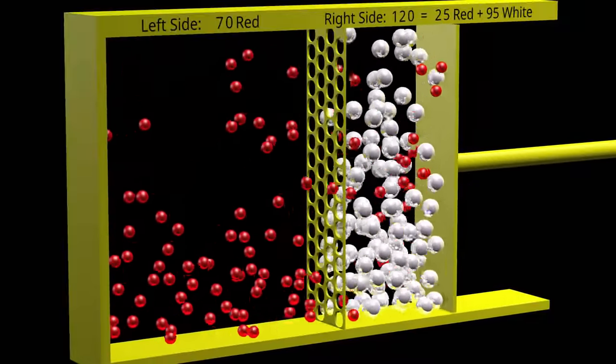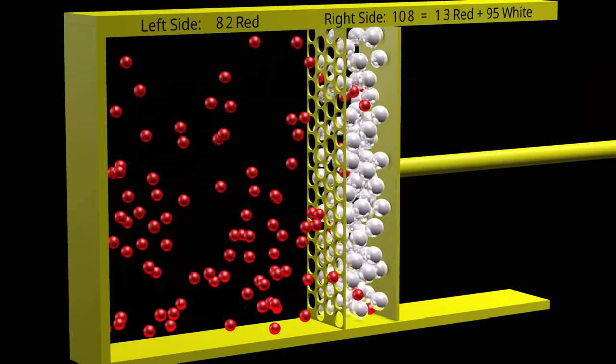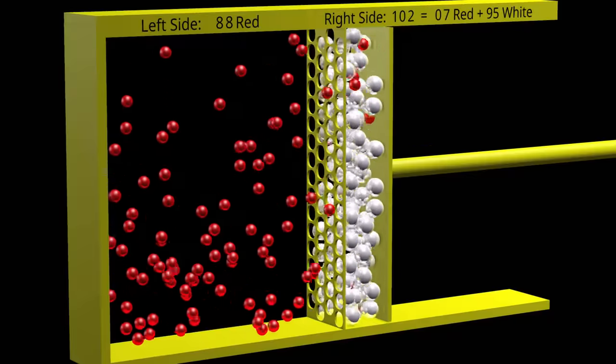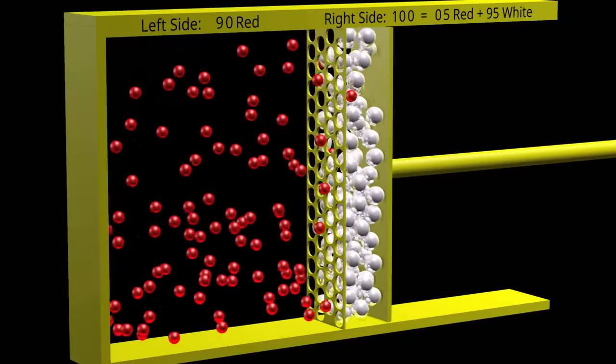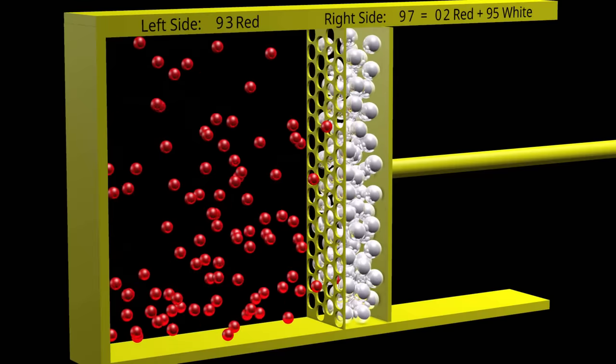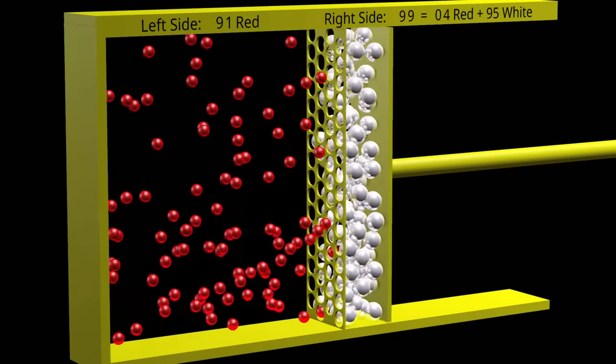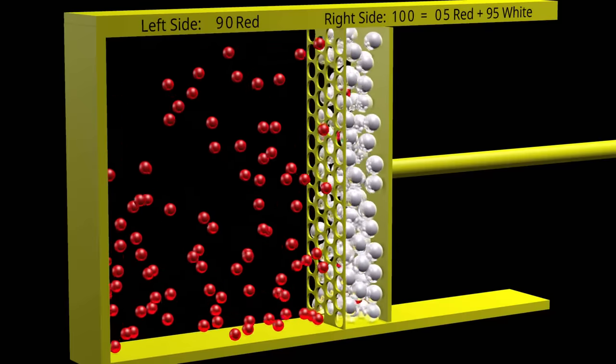If the piston on the right moves towards the left, we can try to force the red particles through the membrane back to the left side. Notice the numbers at the top of the screen for the red particles on the right side of the membrane. The number of red particles on the right side goes down to close to zero.